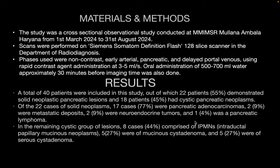A total of 40 patients were included in this study, of which 22 patients demonstrated solid neoplastic pancreatic lesions and 18 patients had cystic pancreatic neoplasms. Of the 22 cases of solid neoplasms, 77% were pancreatic adenocarcinomas, 9% were metastatic deposits, 9% were neuroendocrine tumors, and 4% were pancreatic lymphomas. In the cystic group, 8 cases (44%) comprised IPMNs (intraductal papillary mucinous neoplasms), 27% were mucinous cystic adenomas, and 27% were serous cystic adenomas.